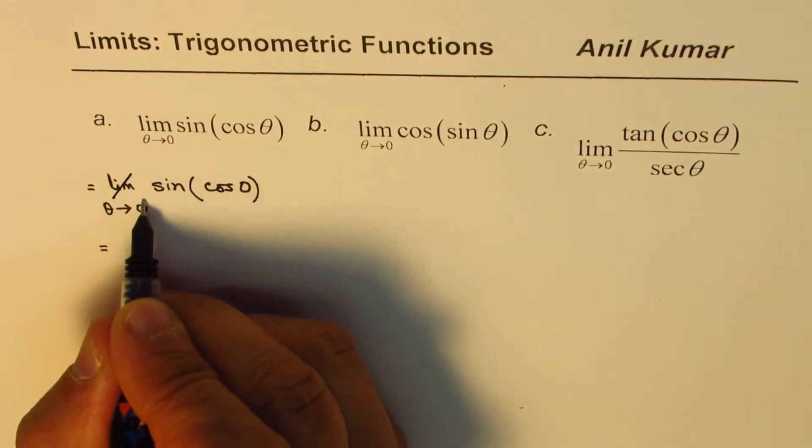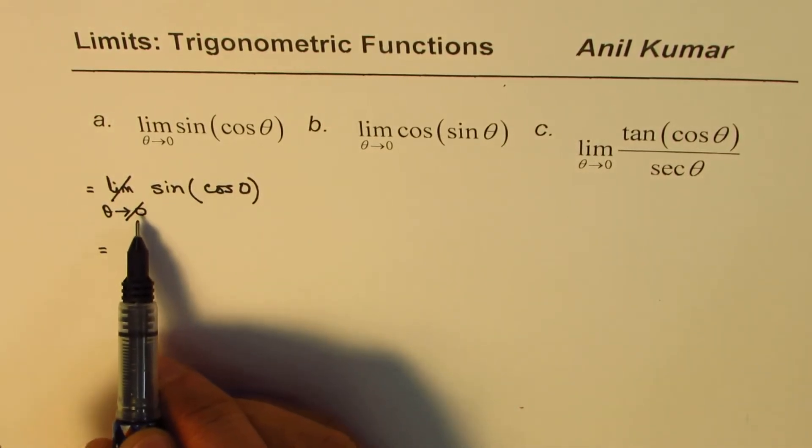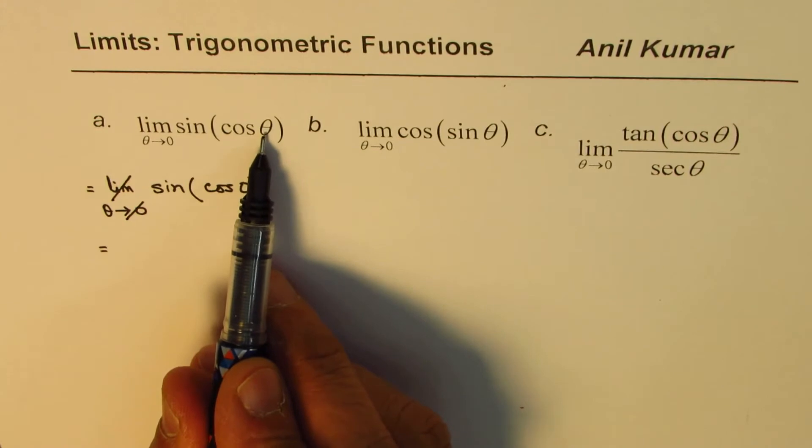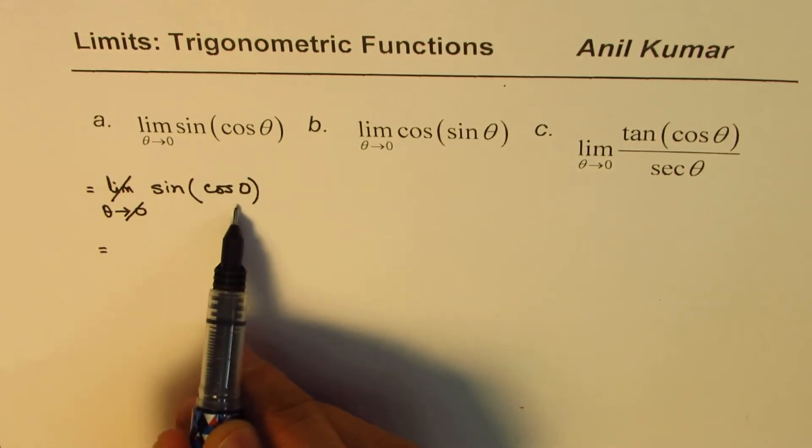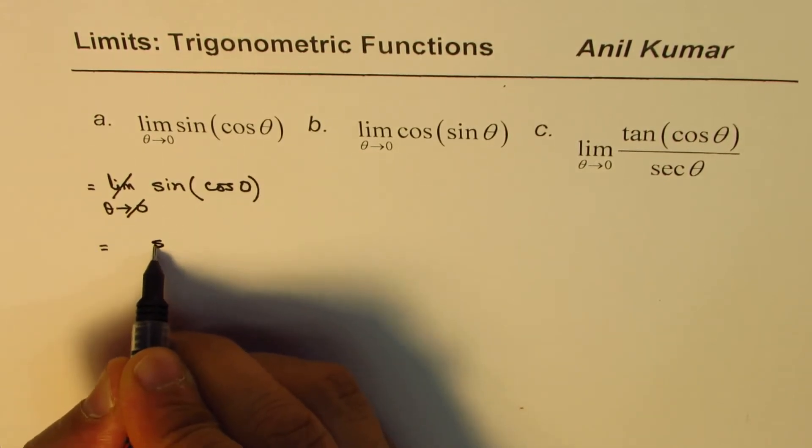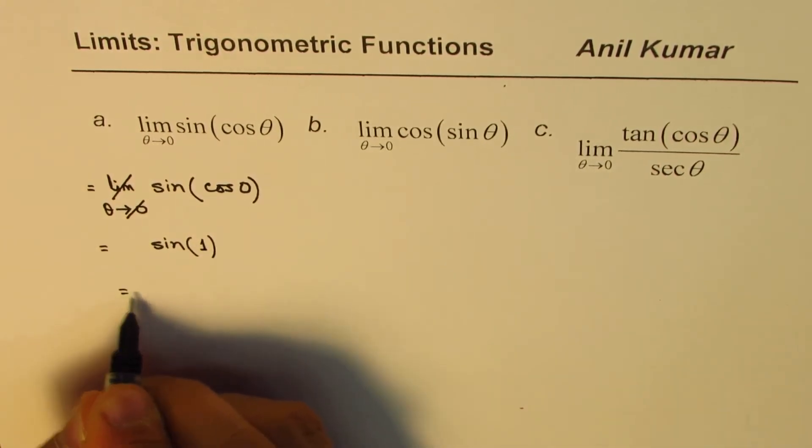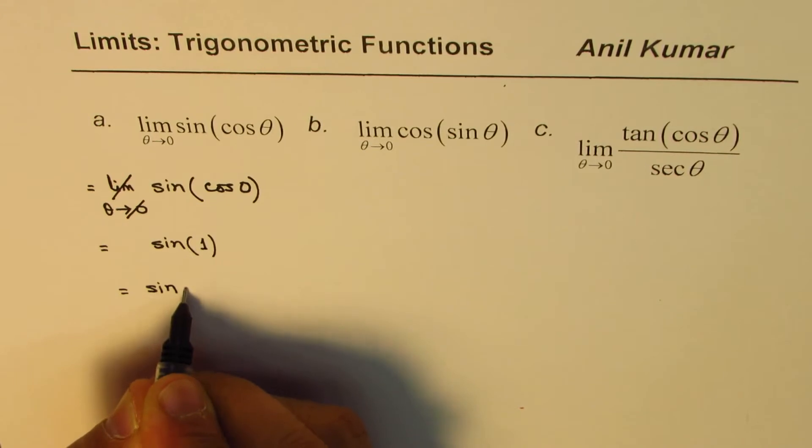When I substitute it, I do not have to write limit theta approaches 0. I substitute theta as 0 and rewrite the given limit. So we have sine cos of 0, cos 0 is 1. So we get sine 1 as our answer.